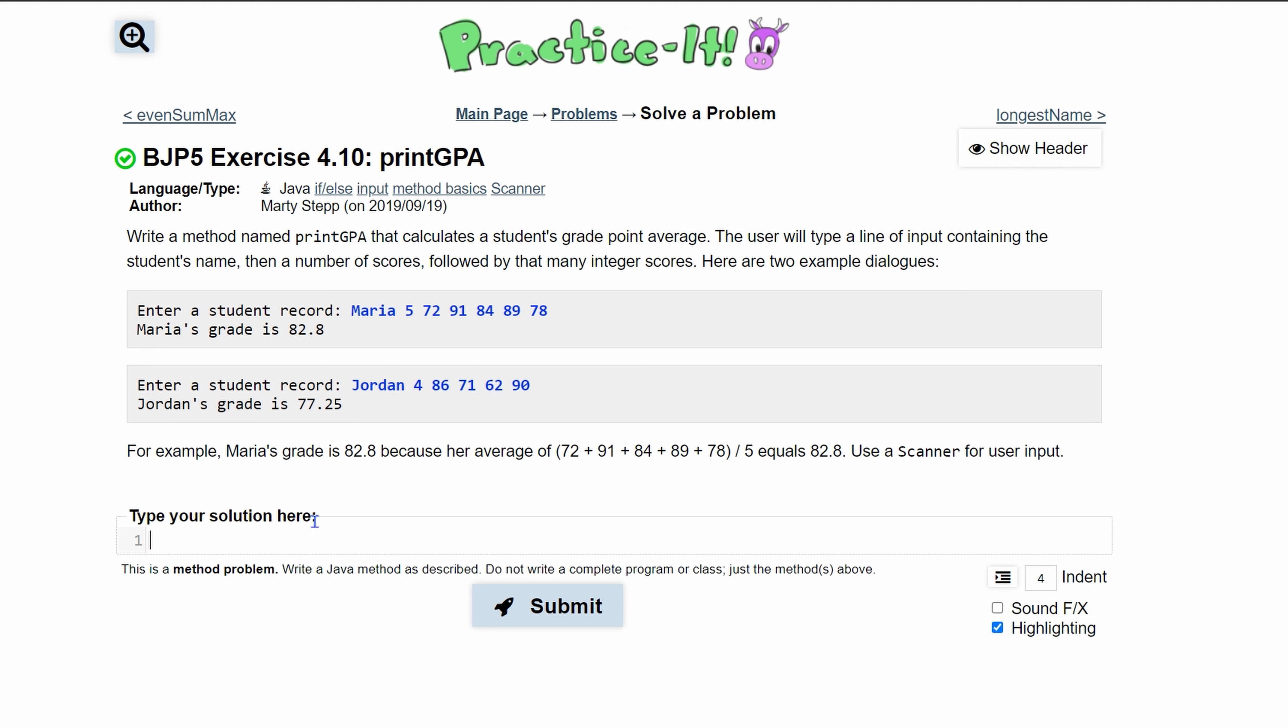We're first going to start off with our method. So write a method named printGPA. We're going to have public static void printGPA with no parameters. So this is what it's going to look like.